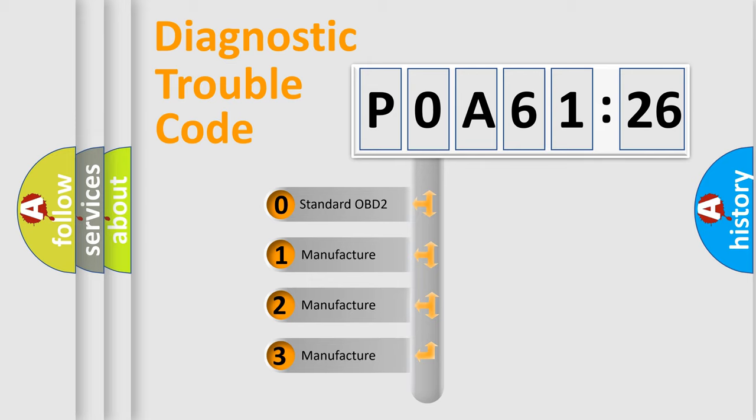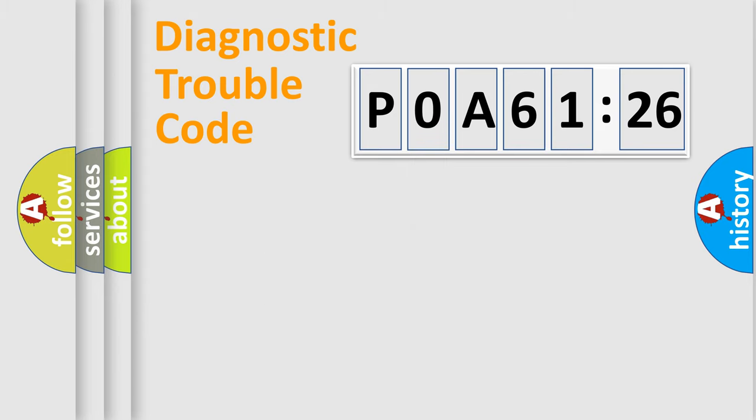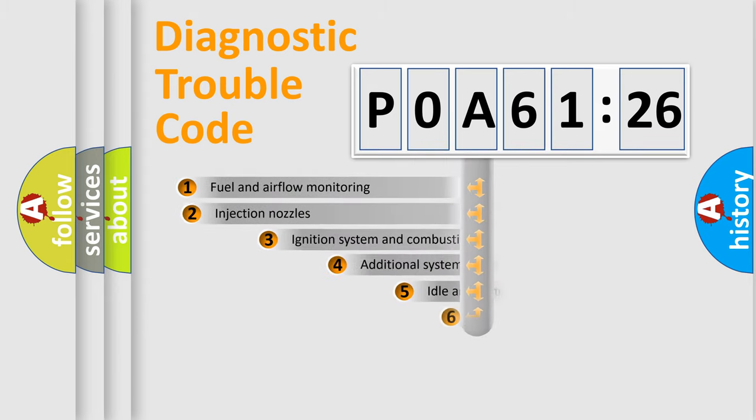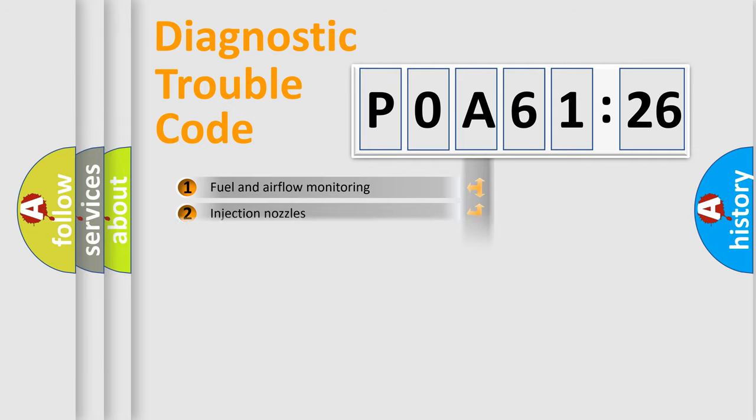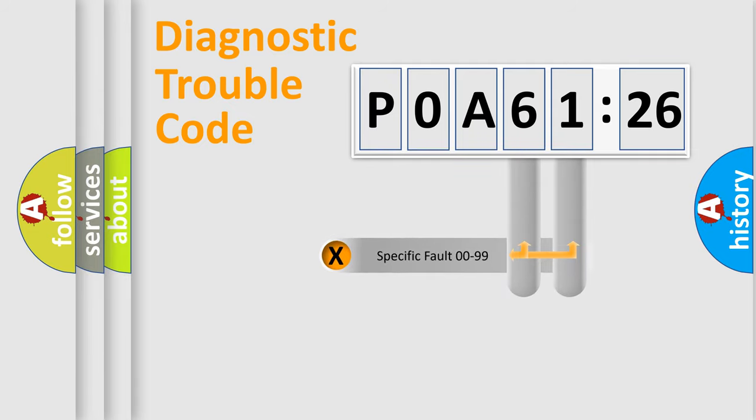If the second character is expressed as zero, it is a standardized error. In the case of numbers 1, 2, 3, it is a manufacturer-specific expression of the car-specific error. The third character specifies a subset of errors. The distribution shown is valid only for the standardized DTC code. Only the last two characters define the specific fault of the group.